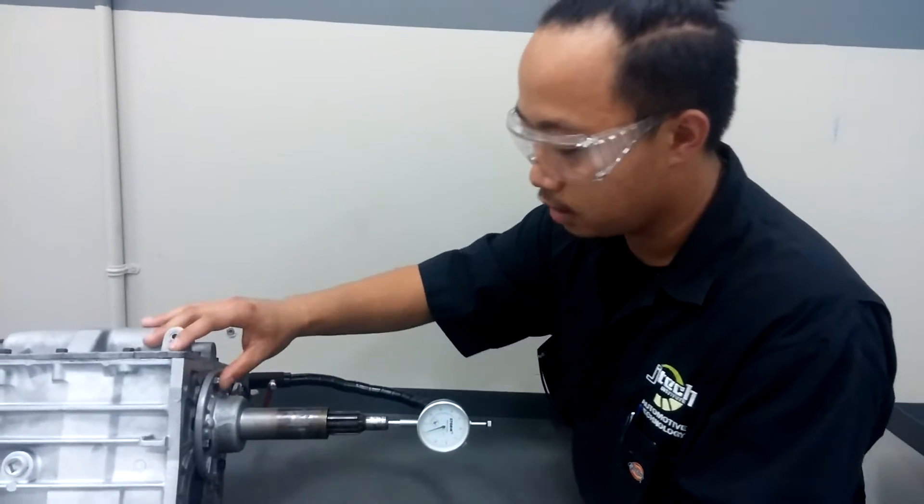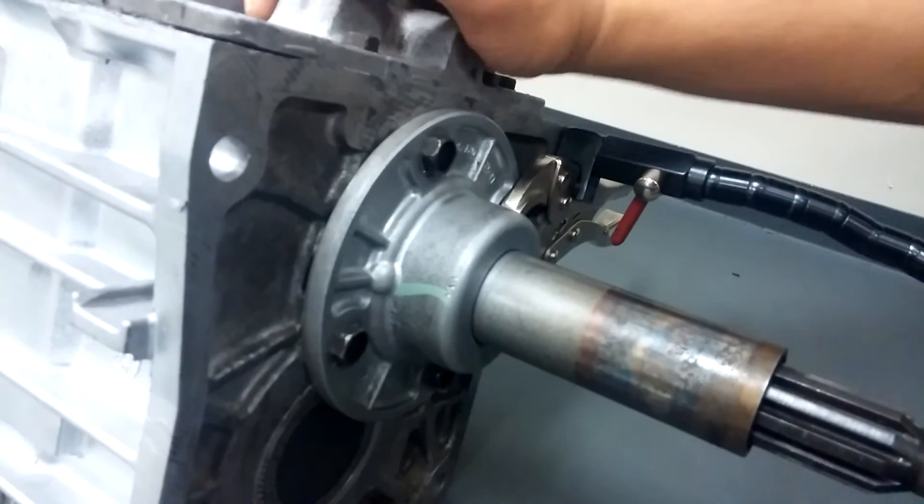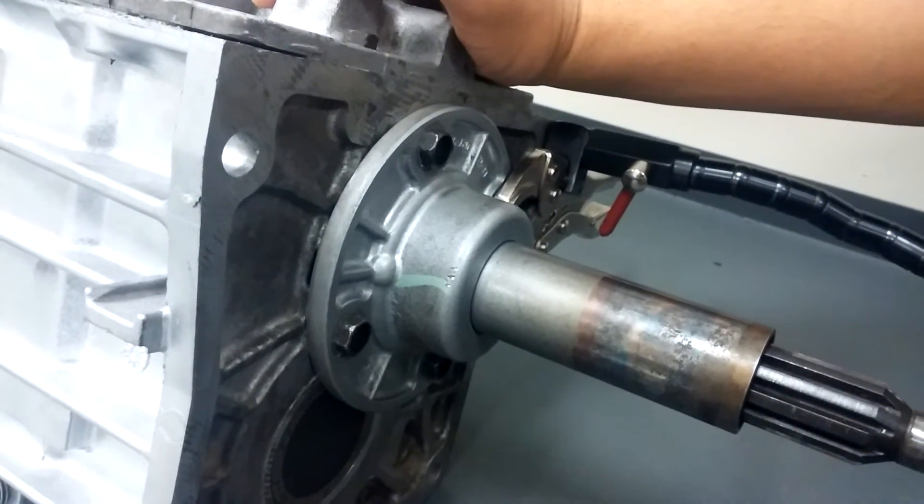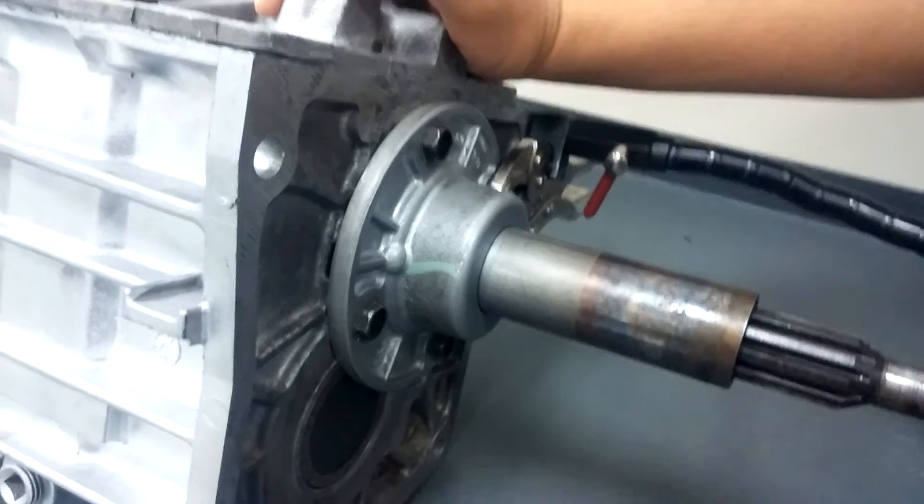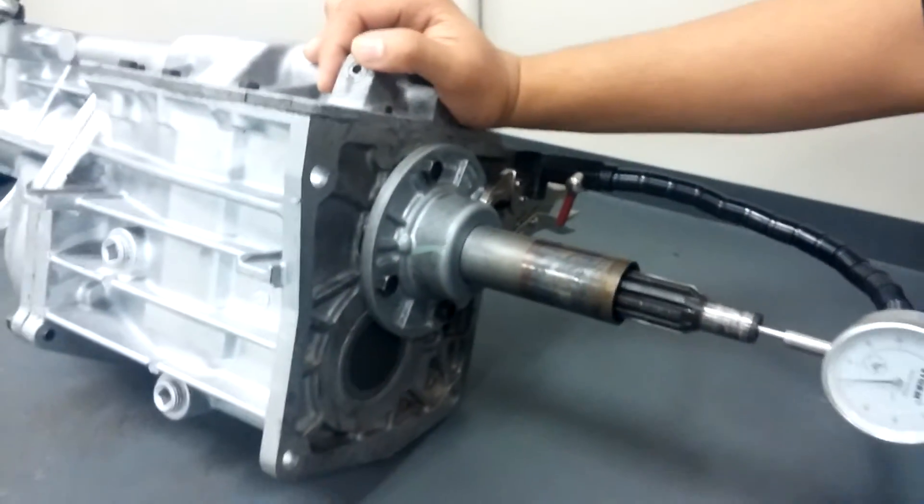So you're going to want to remove these bolts here on the quill. You're going to want to maybe take 1 to 2 thousandths off and install the quill again, measure again, and see where you're at.